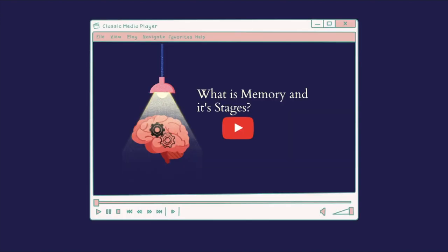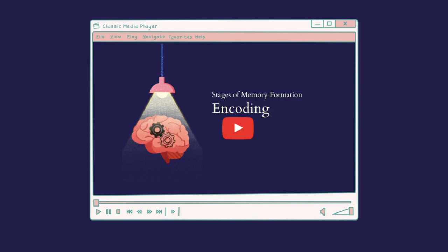We already covered two videos in this series. In the first video, we gave an introduction to this topic and defined what memory is, as well as looked at an overview of the three key stages included in the stages of memory formation. In the second video, we covered the first stage of memory formation, which is encoding.